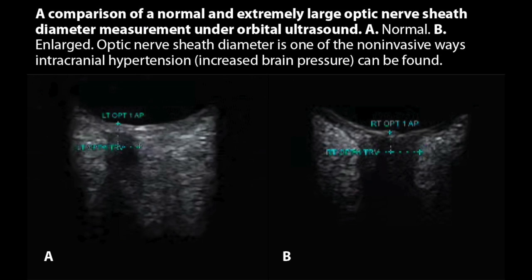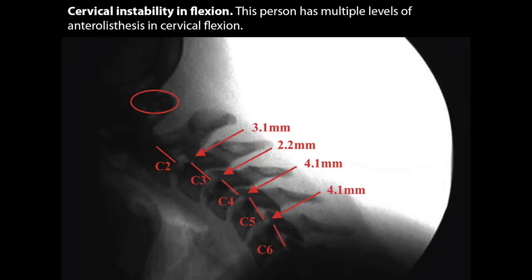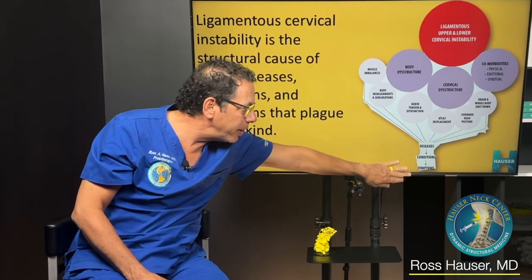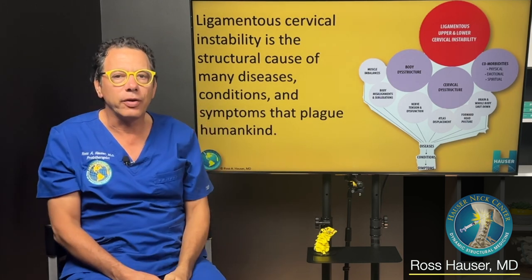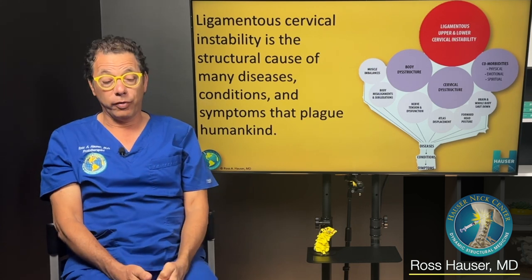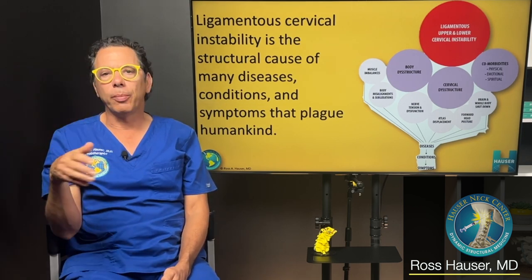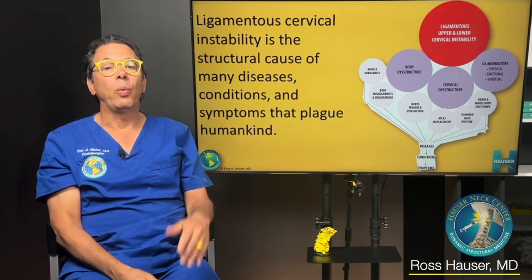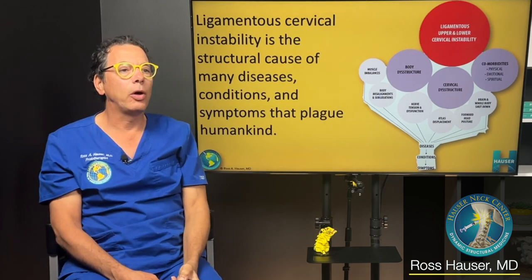We document ligamentous cervical instability by digital motion x-ray. People with conditions and diseases typically see doctors who give medications, but if there's a structural cause, medication isn't going to resolve it. I've been doing this for 30 years with one objective — always trying to cure the problem or get resolution of symptoms. When there's a structural cause, you have to treat the disease structurally. Often the chemistry of the body is disrupted even in autoimmune disease because of a structural problem. The most common structural problem we see is upper and lower cervical instability.